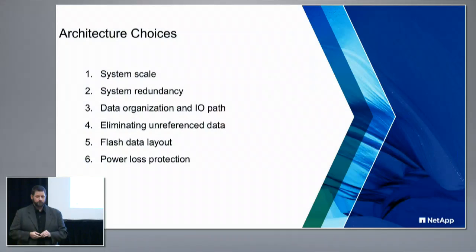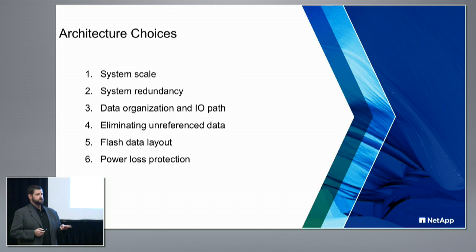We'll look at six architectural areas and move through them quickly. There is only one of these six where all three vendors made a different choice. In most cases, the choice made is really dependent on the underlying architecture.